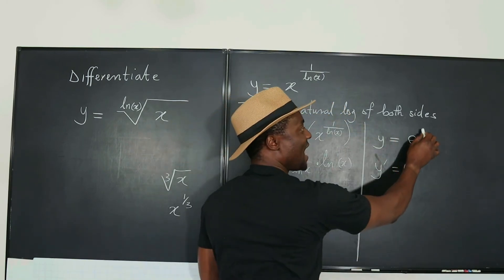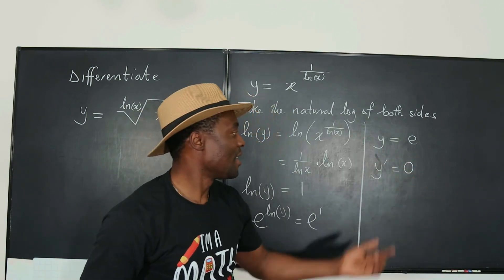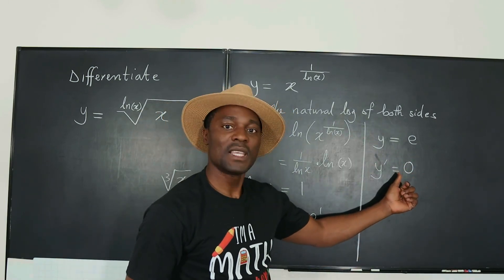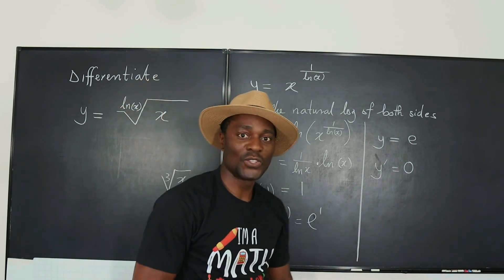But if this was e to the x, that's when you say the derivative of e to the x is e to the x. But y prime equals zero. That's the derivative. And that's the answer to our question.